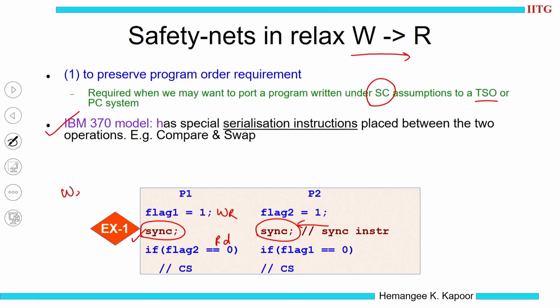So, this write to flag 1, then we have the sync, and then we have the read of flag 2. This write and this read will not be reordered because of the sync instruction. So, this sync instruction acts as a safety net. The implementation of this could be a variety of things; one option is to use a compare and swap instruction.